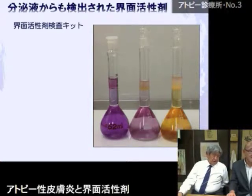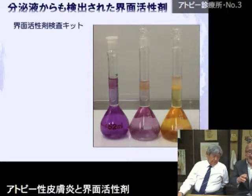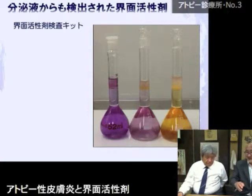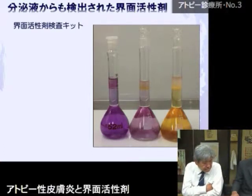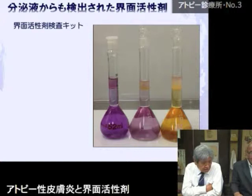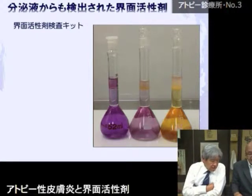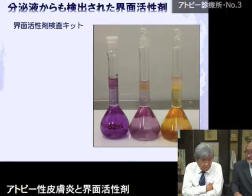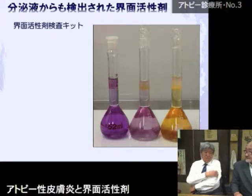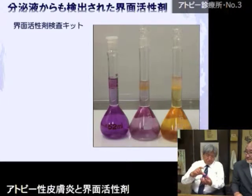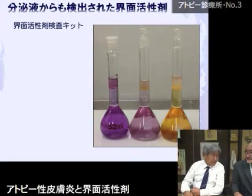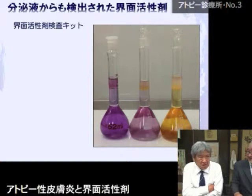水質検査用の化学物質汚染調べるキットがあって、その中の一つを使って体から出る分泌液に界面活性剤がどのくらい含まれているか、多分日本で初めてかもしれないけど検査しています。アトピーの人と一般の人の差も今から明らかにしていこうと。ある患者さんがリバウンドで皮膚がボロボロと落ちてきたものを20ccの試験管にいっぱい集めてきてくれました。その中にどれくらいの界面活性剤が含まれているかも検討します。